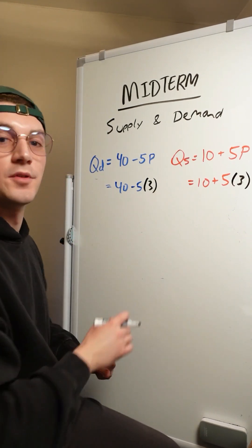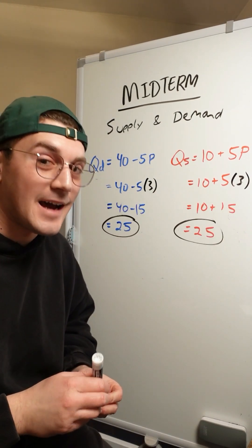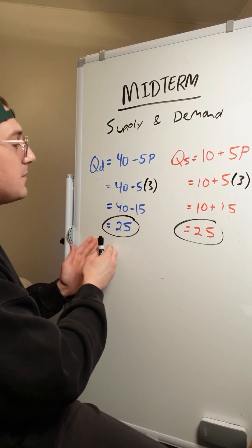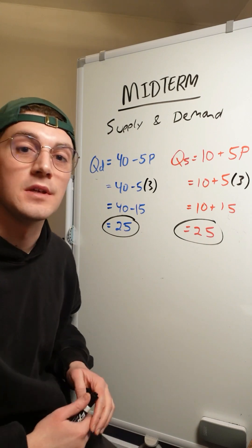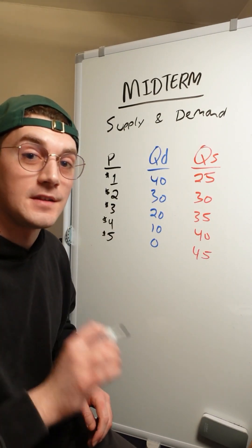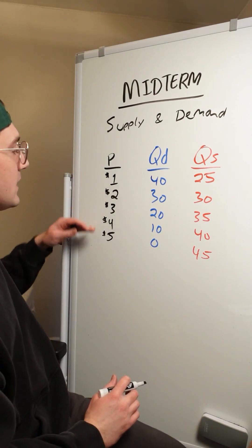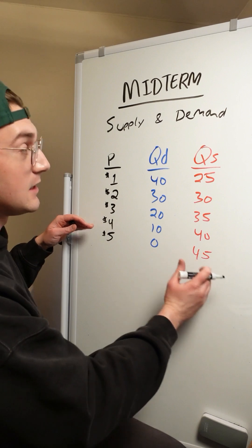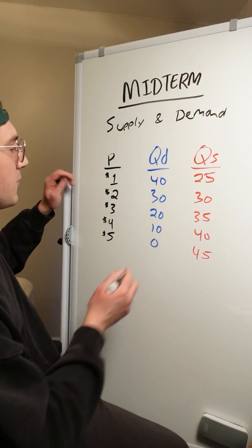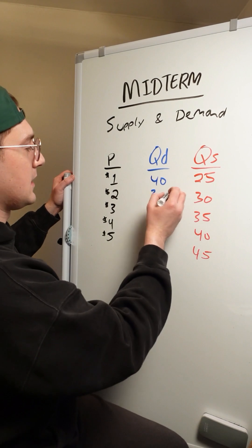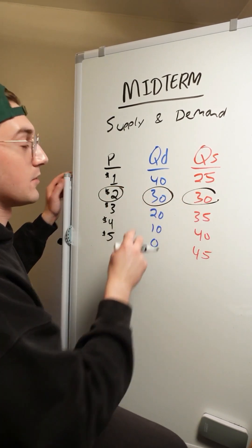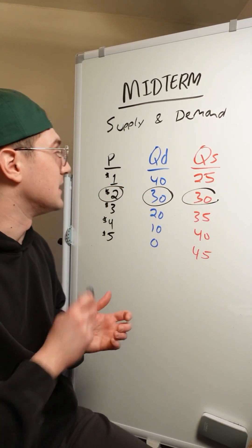Just to prove it, I'll show it with both equations. At equilibrium, at a price of $3, quantity demanded and quantity supplied both equal 25 units. For a table, it's even easier — just find the price at which quantity demanded equals quantity supplied. If you can't find one, find the closest. Here at $2, we have both a quantity demanded and quantity supplied of 30 units, so that's the equilibrium in this market.